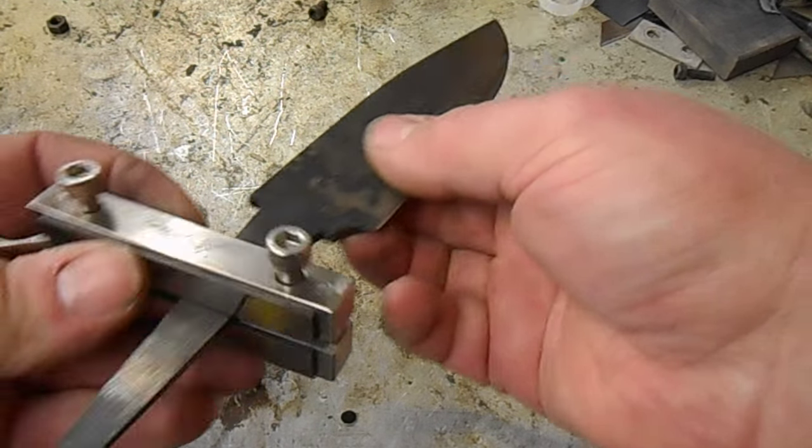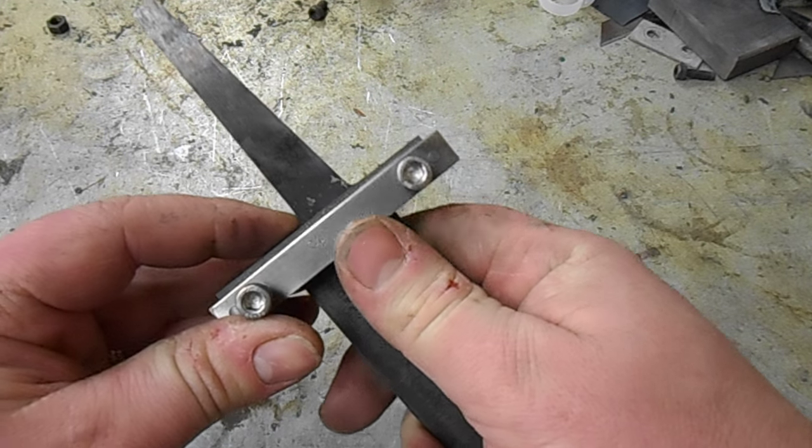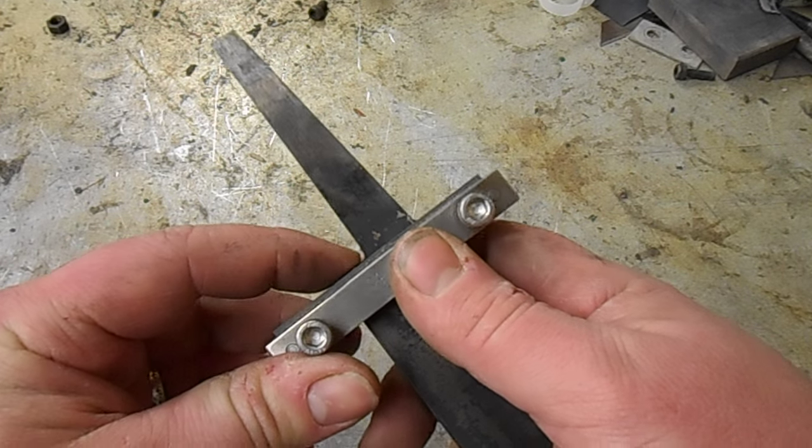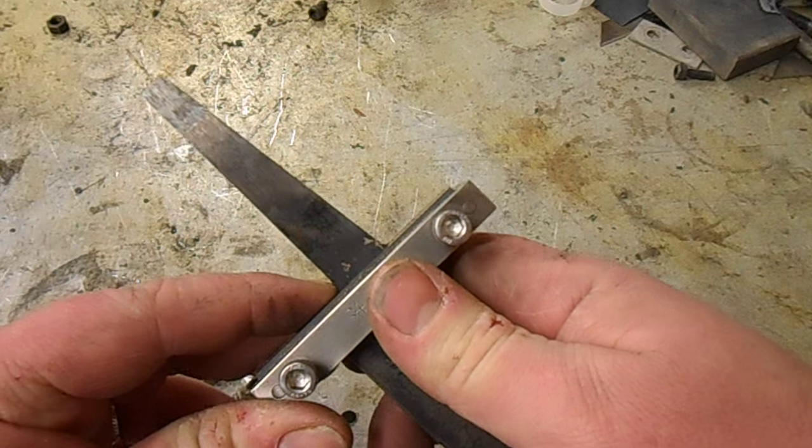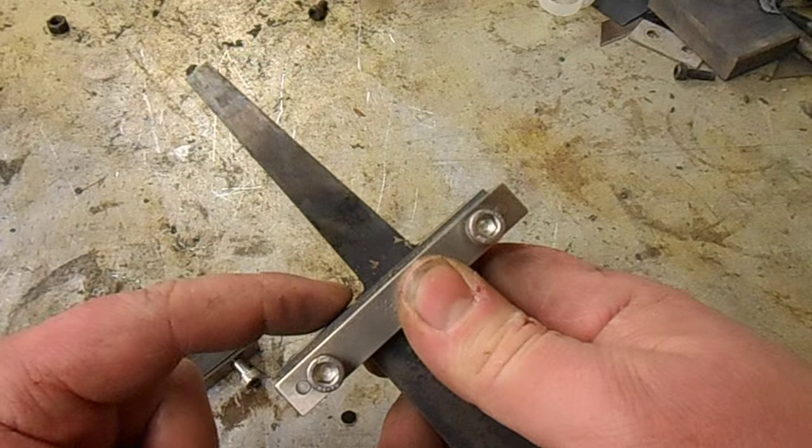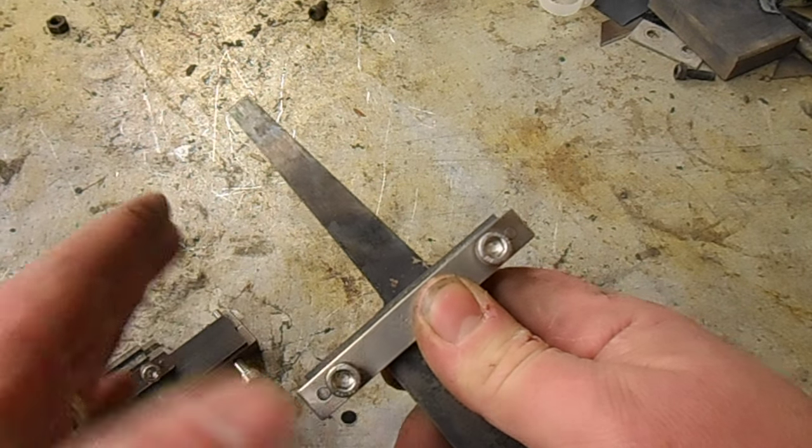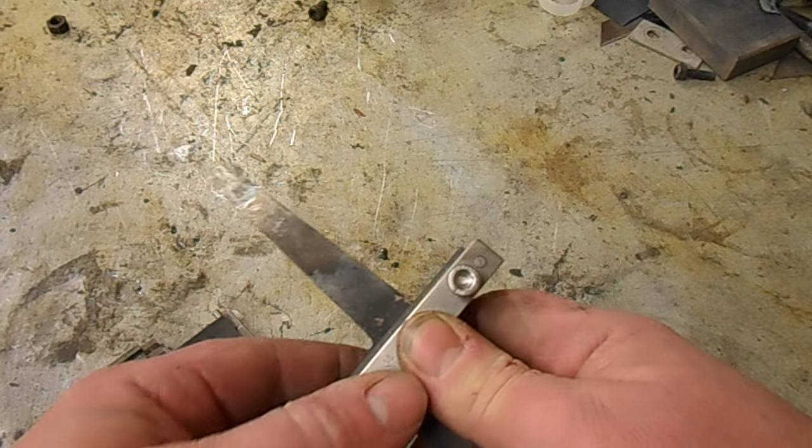The other main use if you're doing hidden tang knives like this one is to clamp it on your Ricasso again, but the other way around. And that way you can file or use a disc sander, flat disc sander, or even your belt sander with a nice fresh belt and a flat platen. And go to and grind your shoulders or file your shoulders nice and flat and square and in line. So when you bring your guard up, it's going to line up perfectly.